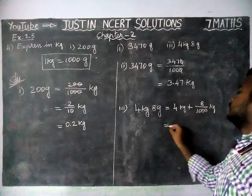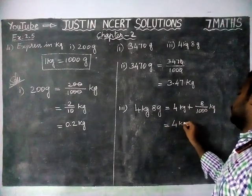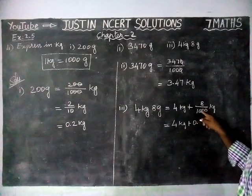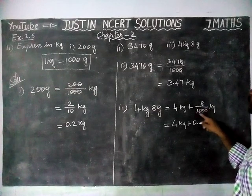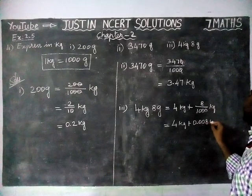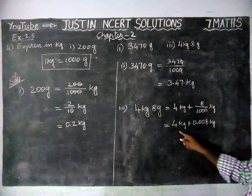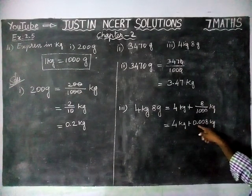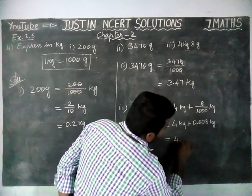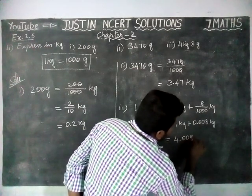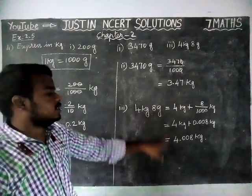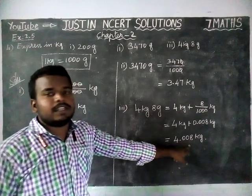So we need 3 decimal points: 1, 2, and the 8 is there — 0.008 kilogram. So now, 4 kilogram plus 0.008 kilogram, we are going to add this to get 4.008 kilogram. So we have converted 4 kilogram 8 grams equal to 4.008 kilogram.